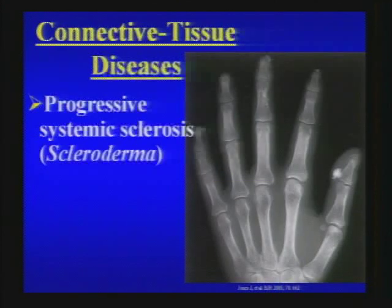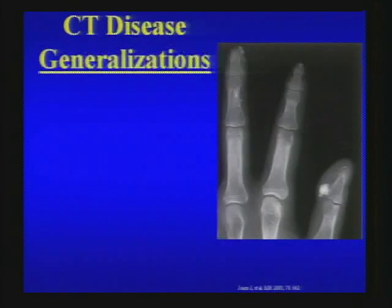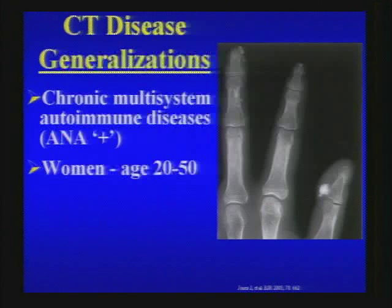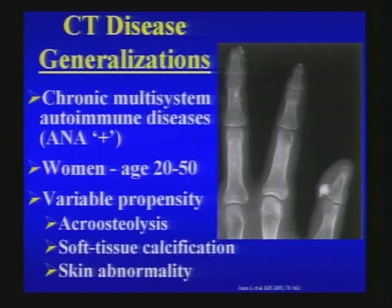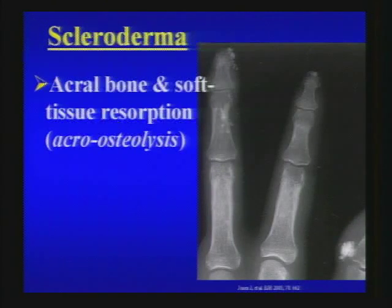Connective tissue diseases include scleroderma, lupus, dermatomyositis, and polymyositis. These are chronic multi-system autoimmune diseases with an increased propensity for a positive ANA, most commonly presenting in young to middle-aged women. In all of these conditions, there is variable propensity to acro-osteolysis, soft tissue calcification, and skin abnormalities. With scleroderma specifically, we see acral bone and soft tissue resorption — acro-osteolysis — along with characteristic dystrophic-appearing calcification.